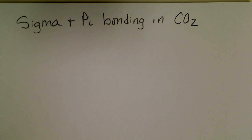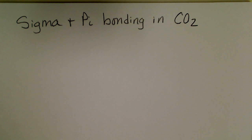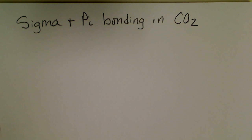In this video, we are going to look at the Lewis dot structure for carbon dioxide, and then from the dot structure, we're going to try to draw the hybrid orbital picture of carbon dioxide and show the sigma and pi bonding.